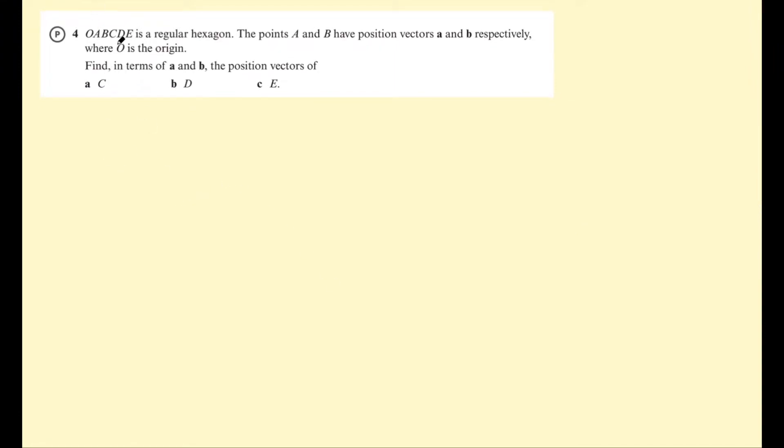Okay, let's do some problem solving questions. So this one says O, A, B, C, D is a regular hexagon. The points A and B have position vectors a and b respectively, where O is the origin. Find in terms of a and b the position vectors of C, D, and E. I encourage you to draw a diagram. If they don't give you one for a question like this involving shapes, you want to know what it looks like. So we have the regular hexagon starting at O.